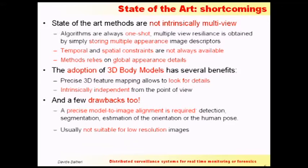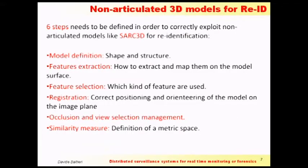These 3D body models are intrinsically view-independent, and they should allow localizing features on the body of a person — looking for details rather than just the global appearance. They have a few drawbacks too, because 3D models require a precise model-to-image alignment, and they're usually not suitable for low resolution. In order to use a 3D model, we have to go through six steps for re-identification.